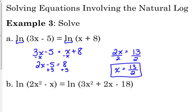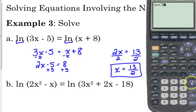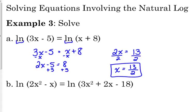It's an equation. We should always check it. Plug it into the original. Natural log of 3 times 13 over 2 minus 5. The natural log of 13 over 2 plus 8. We get the exact same number from the left side and the right side, so 13 over 2 is our solution.